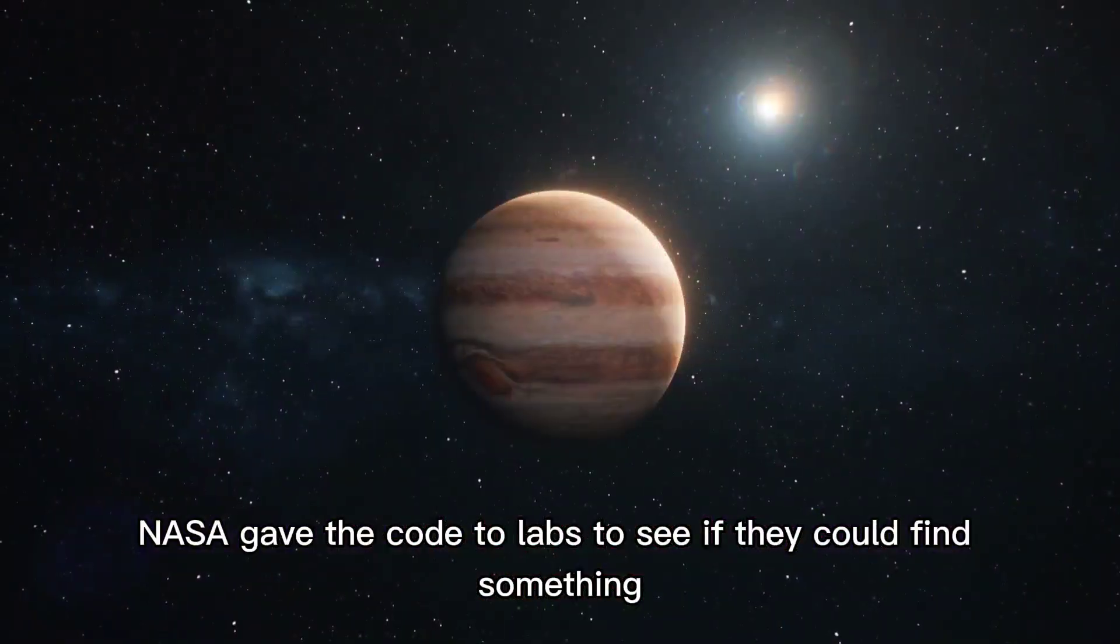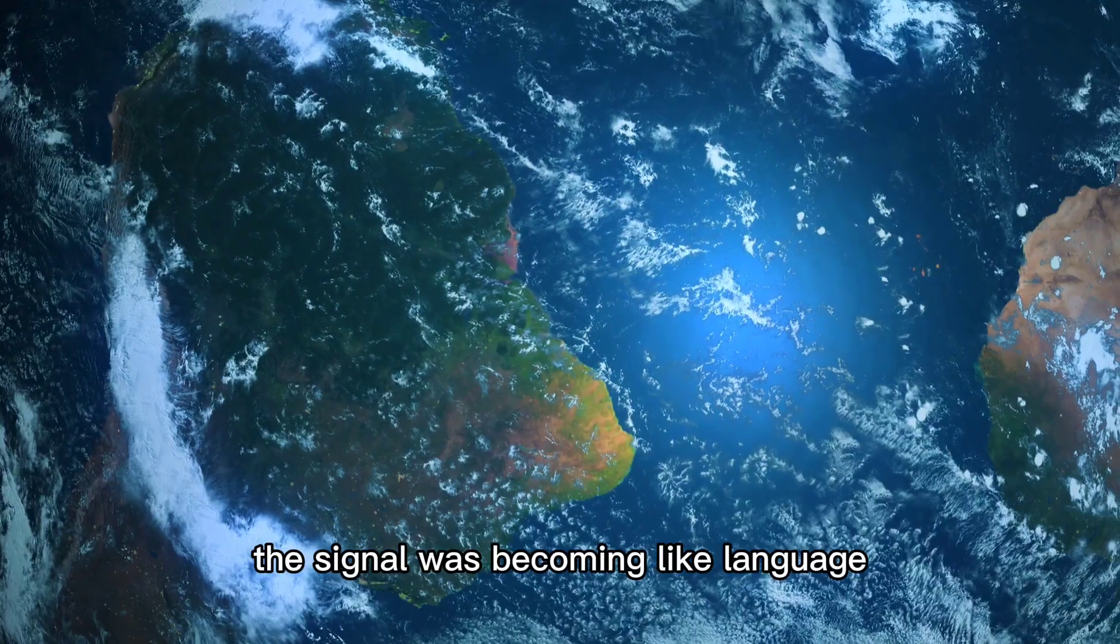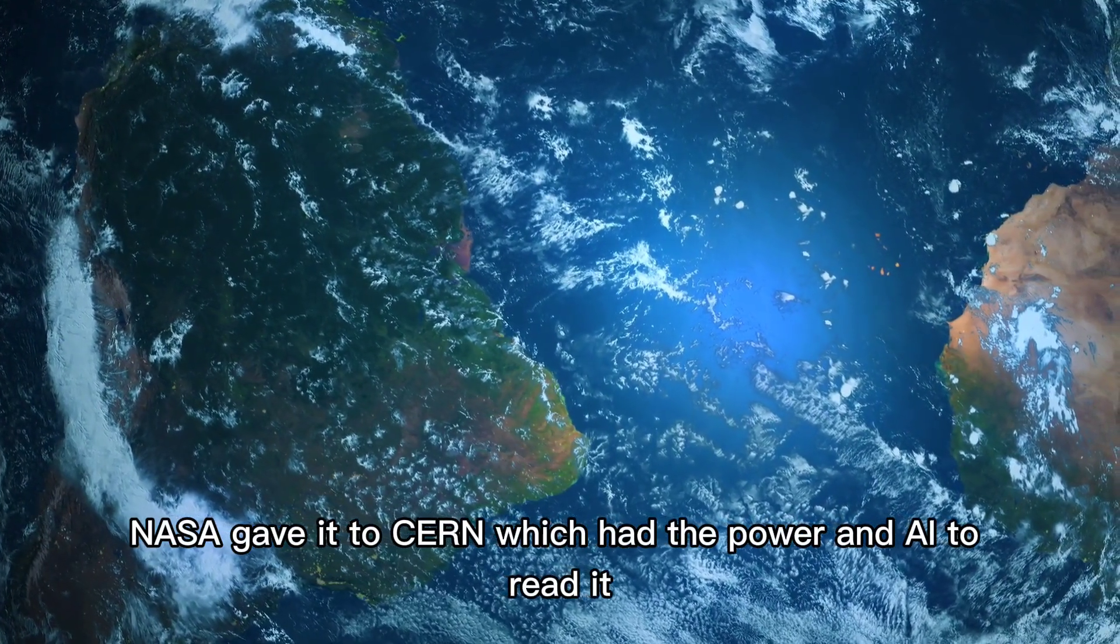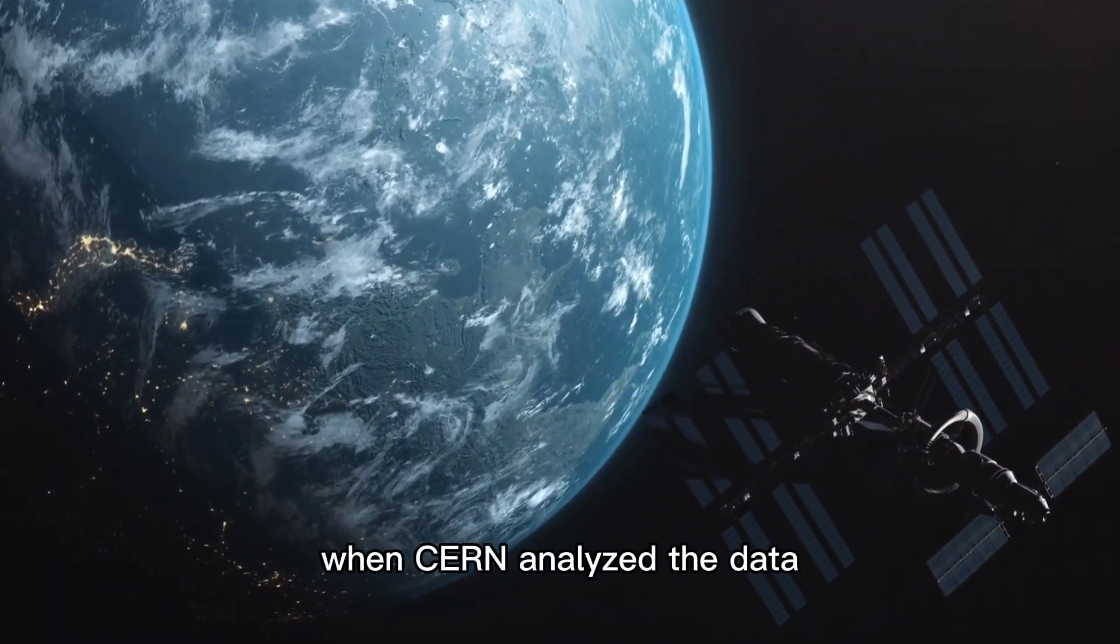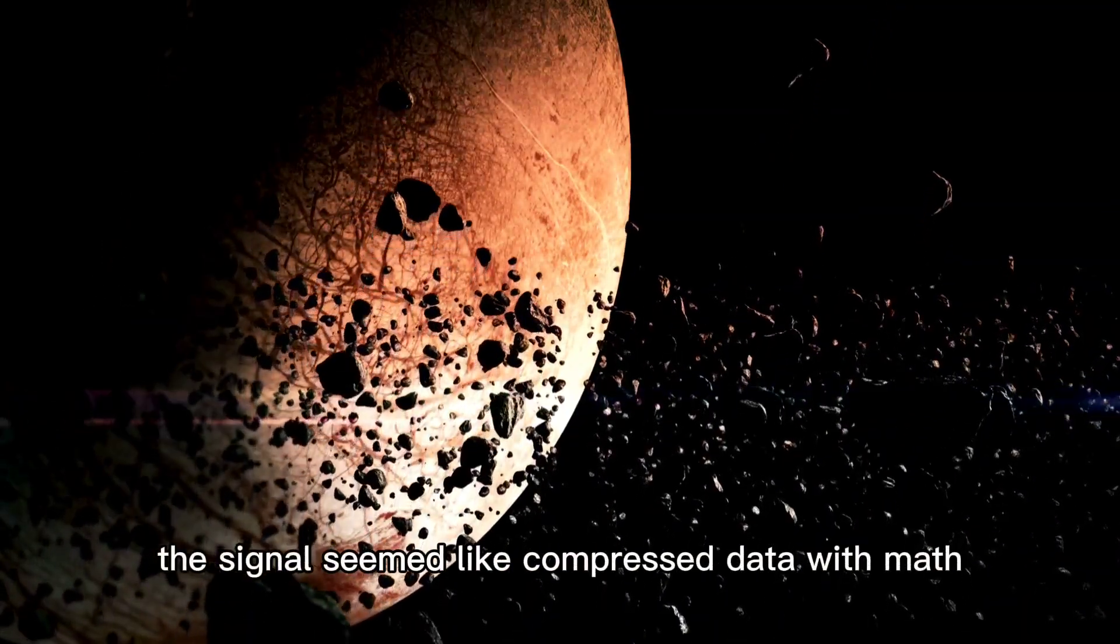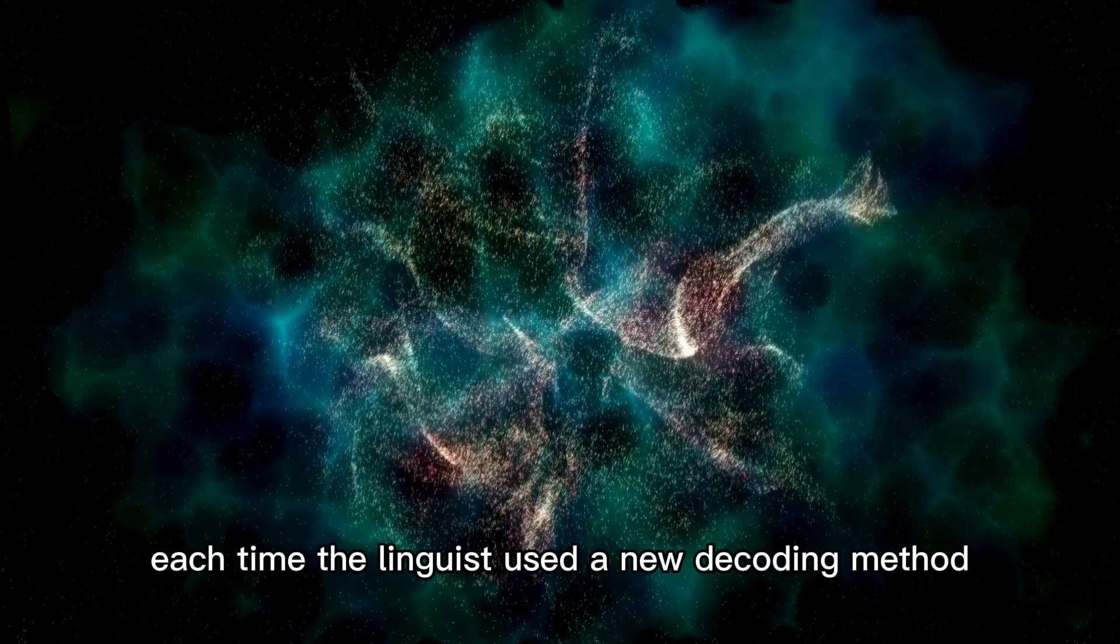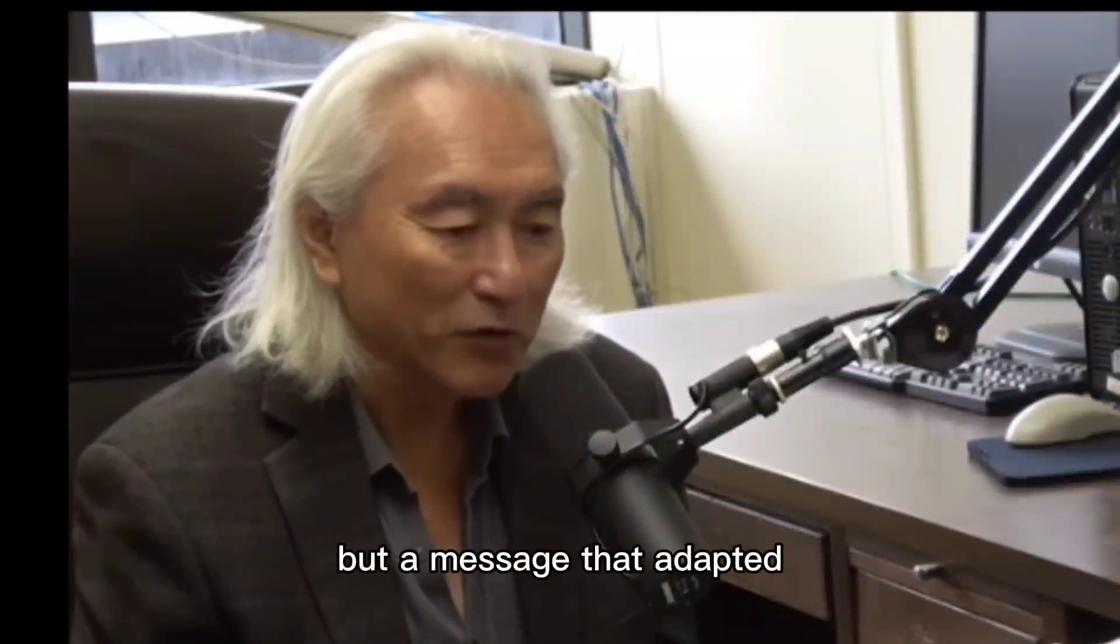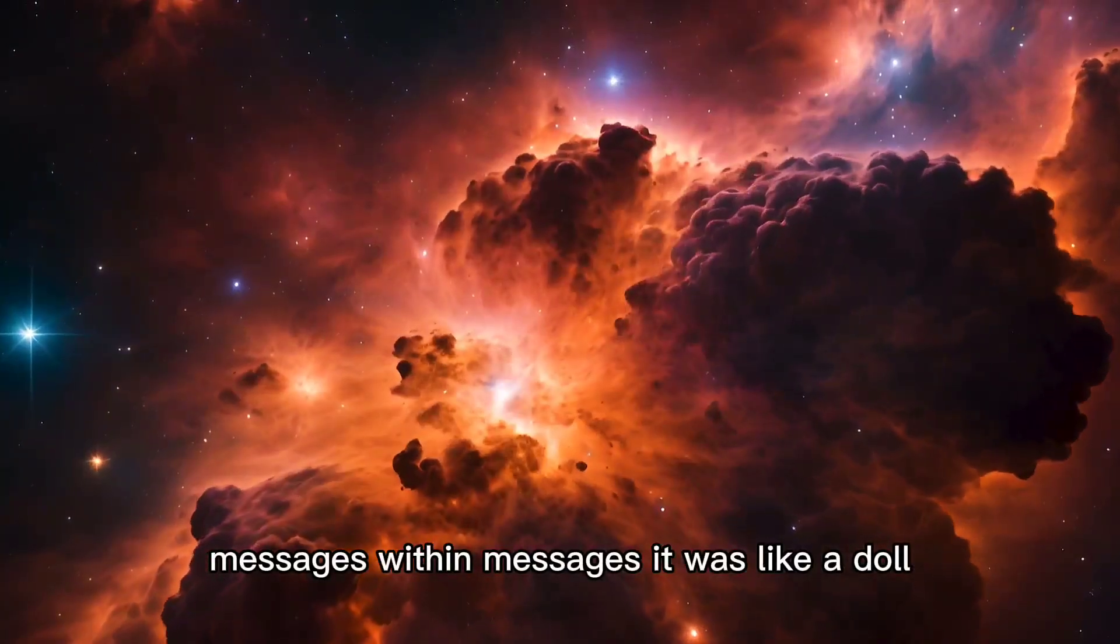NASA gave the code to labs to see if they could find something. CERN in Switzerland, known for physics, not space, found something that changed the mystery again. The signal was becoming like language. When the signal got complex enough, NASA gave it to CERN, which had the power and AI to read it. CERN had started using language models and AI, but no one was ready for what they found. When CERN analyzed the data, things got weird. At first, the signal seemed like compressed data with math. But as they analyzed it, the signal changed, not like a crash, but in response. Each time the linguist used a new decoding method, the signal changed itself. It was like the message was watching them read it and rewriting itself.